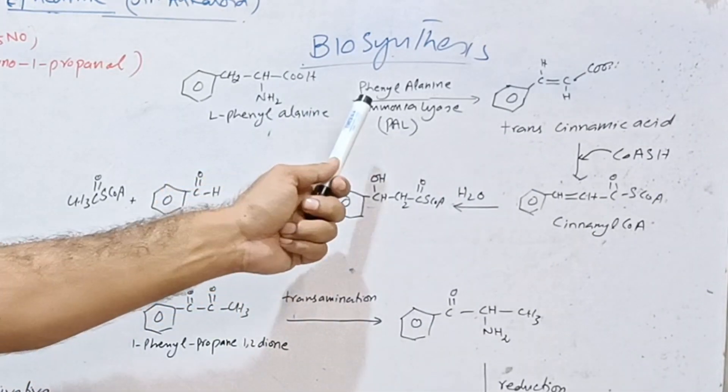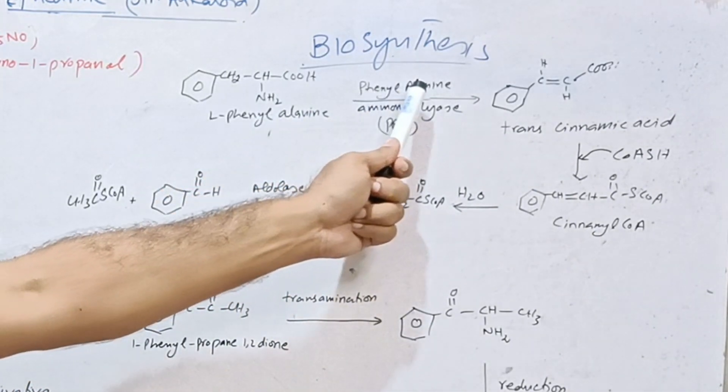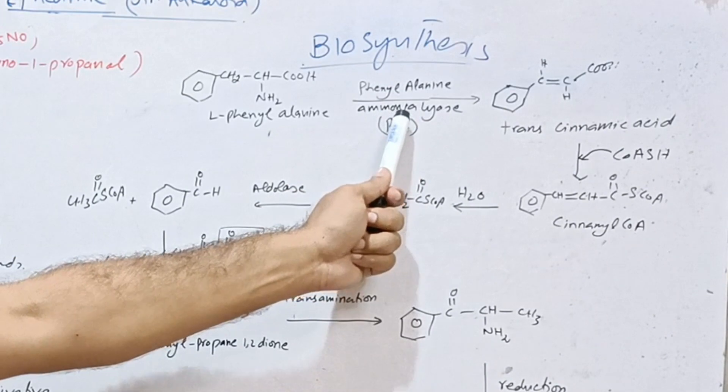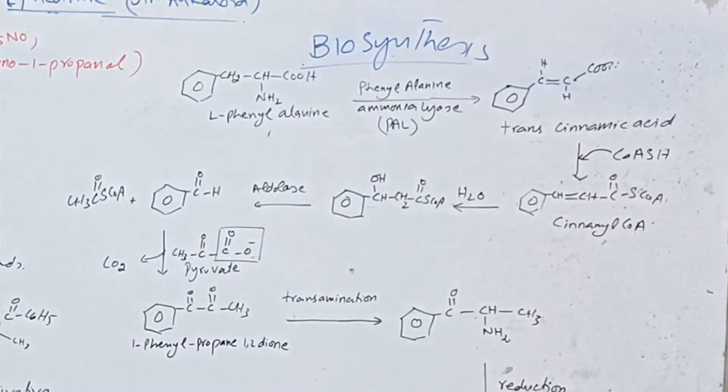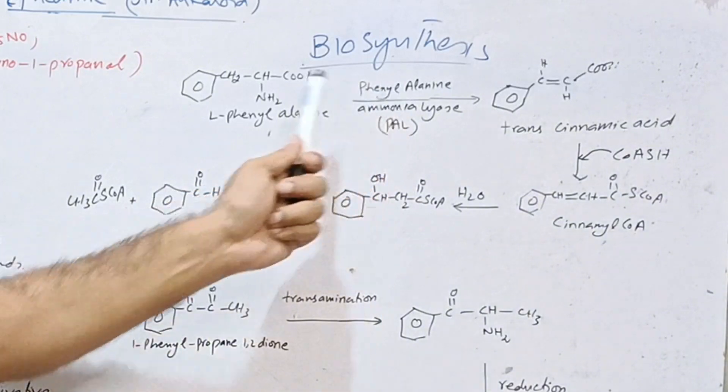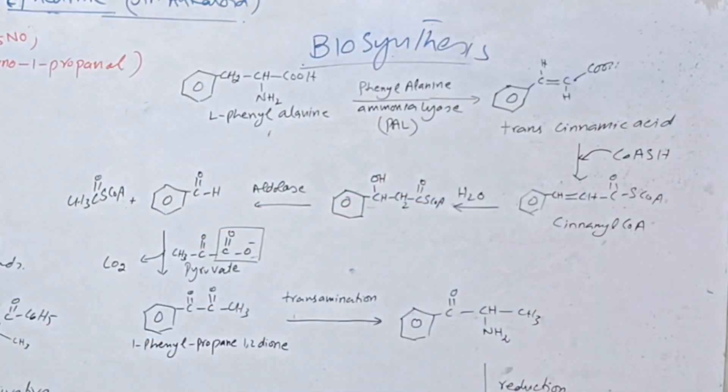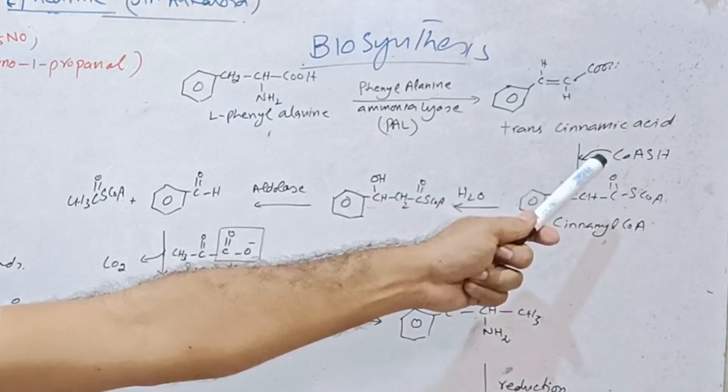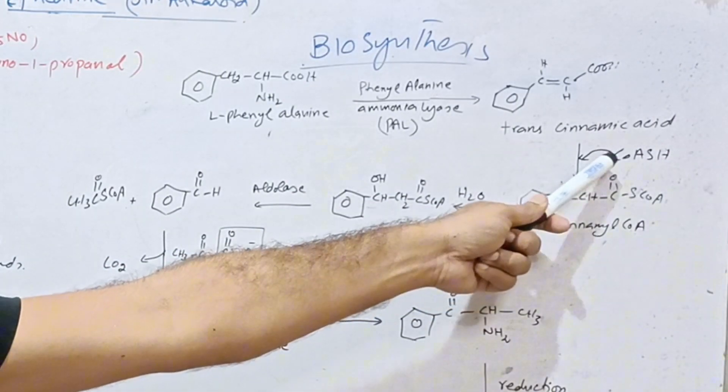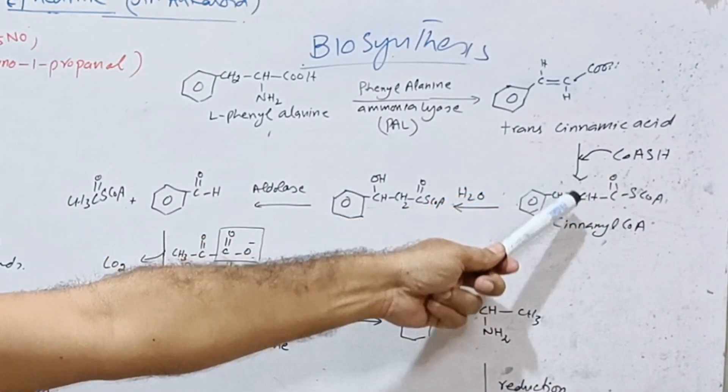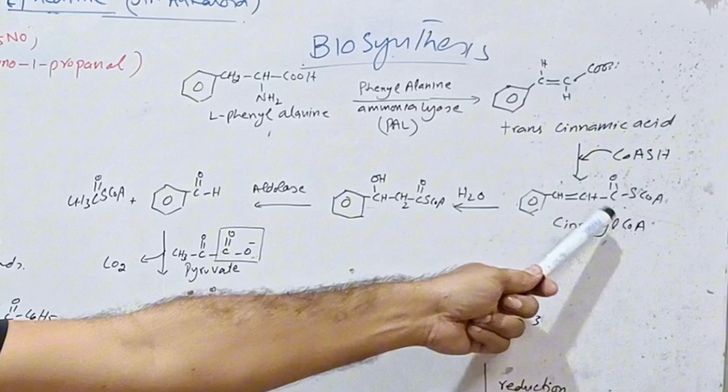This is treated with phenylalanine ammonia lyase, PAL enzyme. So this enzyme causes deamination of this amino acid and we get trans-cinnamic acid. This after reaction with coenzyme A, it forms cinnamyl coenzyme A.